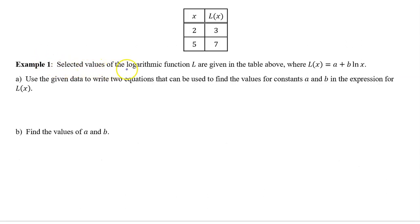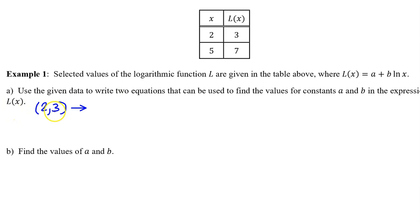Example 1. Selected values for the logarithmic function L are given in the table above, where L of x is equal to a plus b times the natural log of x. Part A: Use the given data to write two equations that can be used to find the values for the constants a and b in the expressions for L of x. Each input-output pair will give us an equation when we plug in the input value for x and let the output value equal the result.